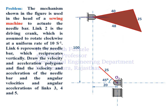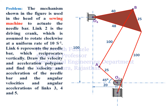Link 6 represents the needle bar which reciprocates vertically. Draw the velocity and acceleration polygons and find the velocity and acceleration of the needle bar and the angular velocity and angular accelerations of links 3, 4, and 5. This is the configuration diagram of the mechanism. We can see that points O2, O4, and O6 are the fixed points of the frame of the sewing machine.